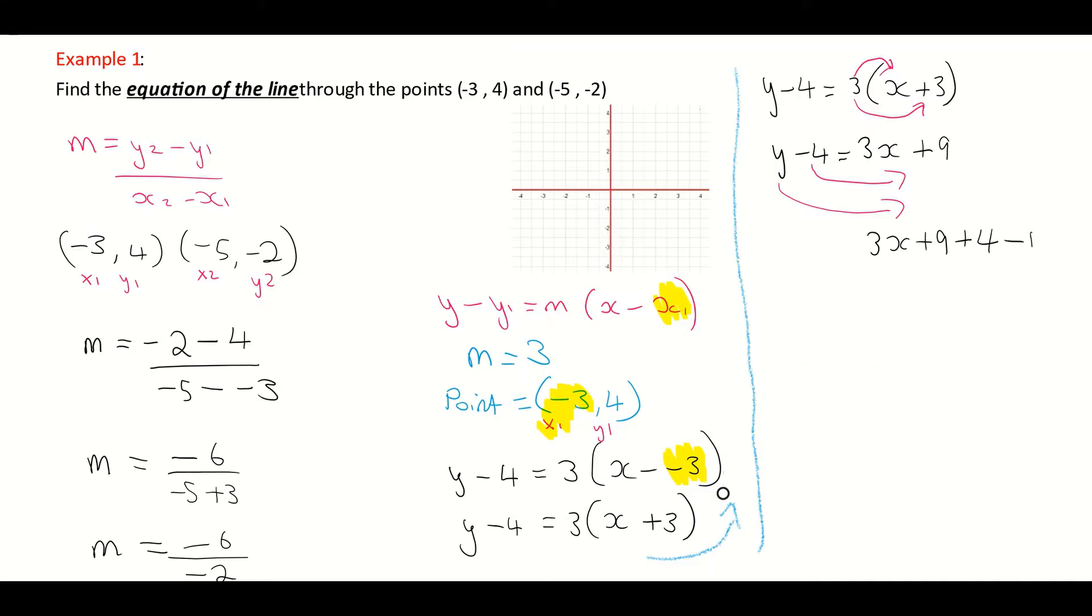Then I'm moving the y over. So change the side, change the sign. It becomes a minus y or I've subtracted y from both sides. And that is then leaving me with equal to 0. I'm then going to group the positive 9 and the positive 4 together. So that's leaving me with 0 is equal to 3x plus 13 subtract y.